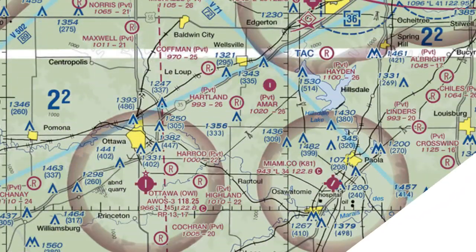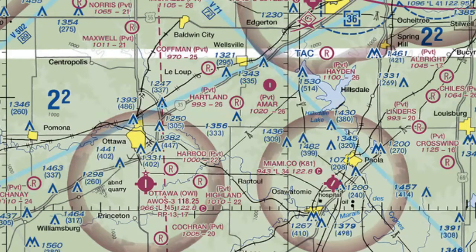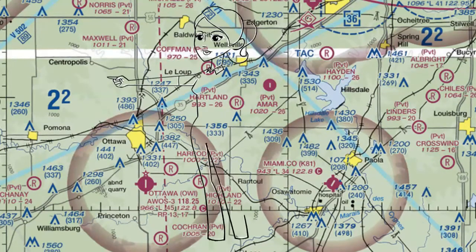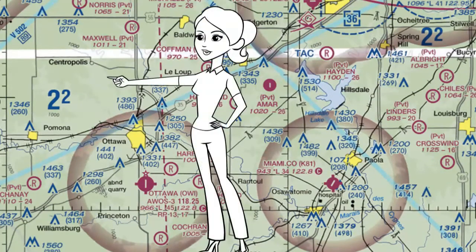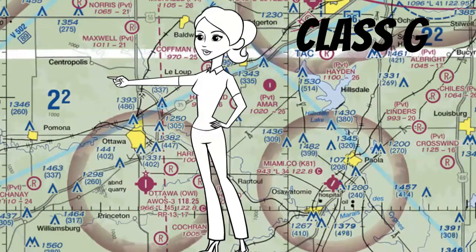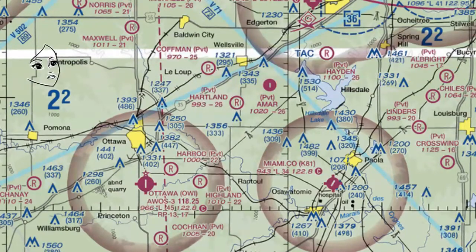If you remember from the last lesson, we said that in these unmarked areas, Class Echo starts at 1,200 feet AGL. Beneath that, you'll find Class Golf, and that starts at the surface and goes up to, but does not include, 1,200 feet AGL.